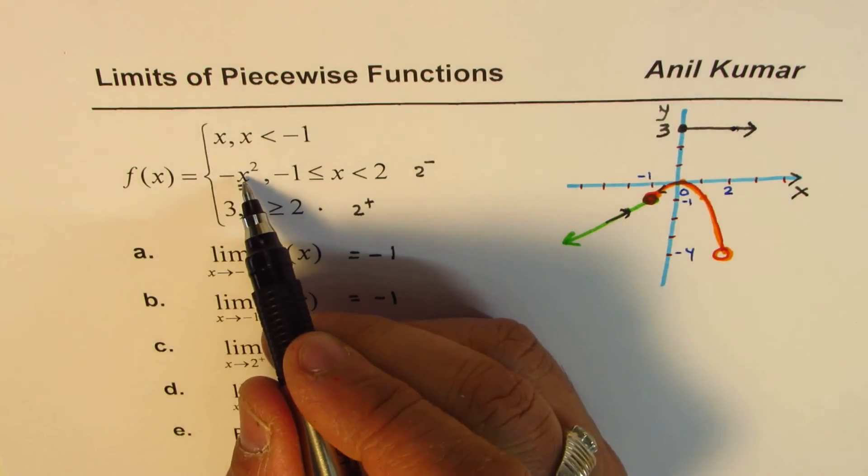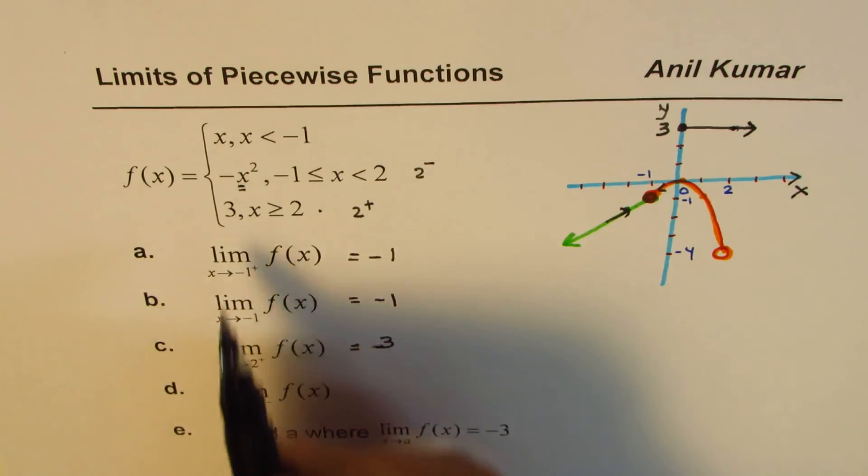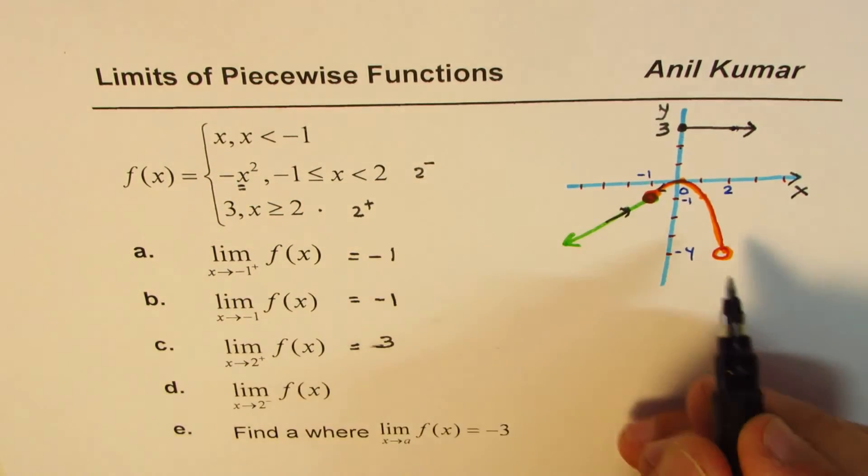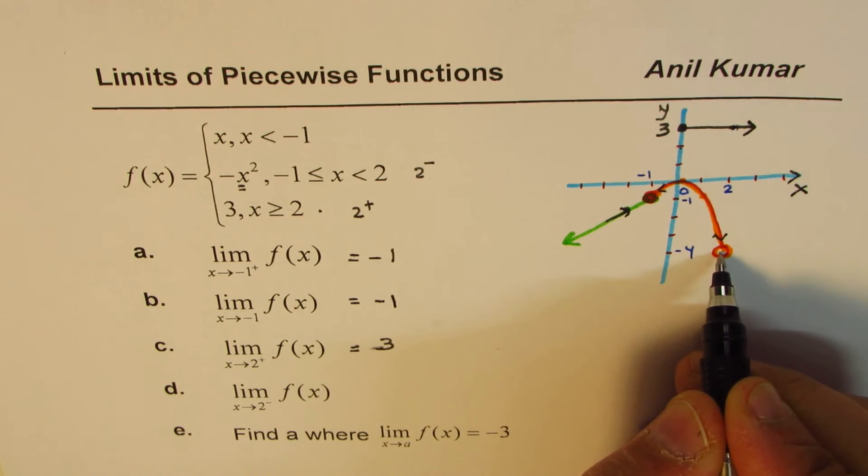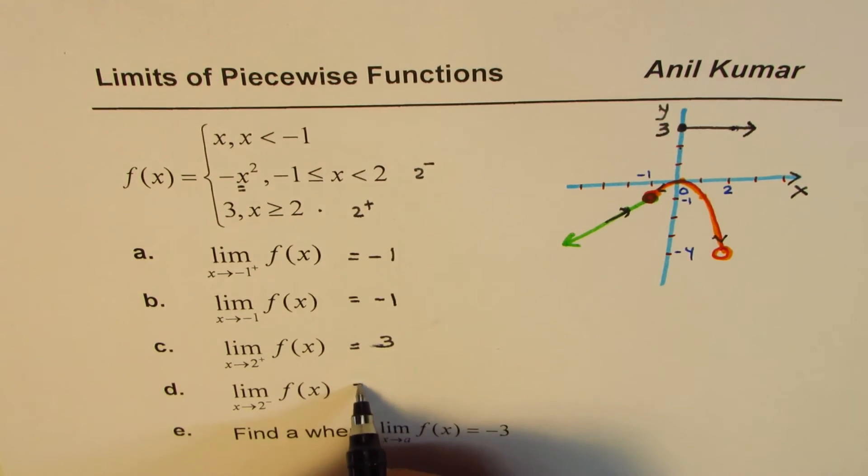right? So if you substitute here 2, you get 2² is 4 minus 4. From the graph, you can see that you are approaching -4 when you approach from the left side. So this answer is -4. Is that okay?